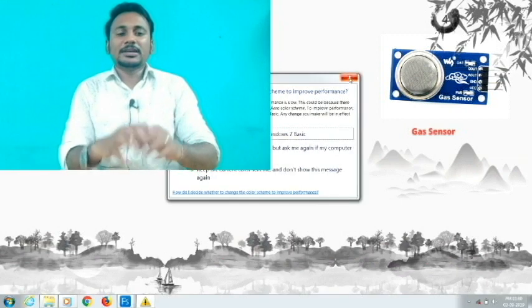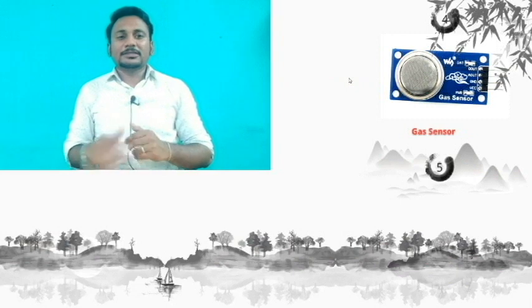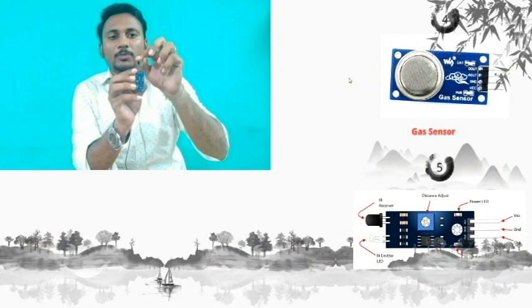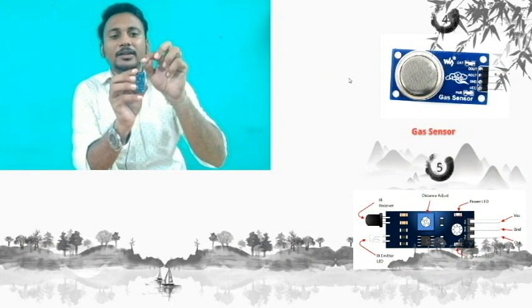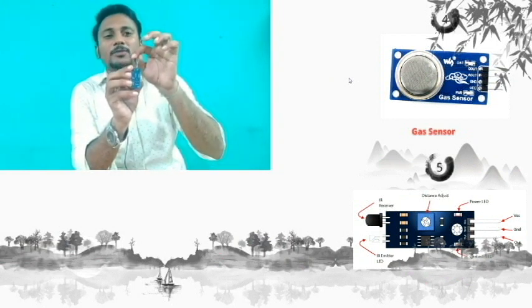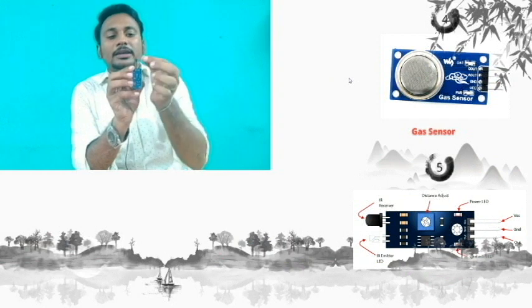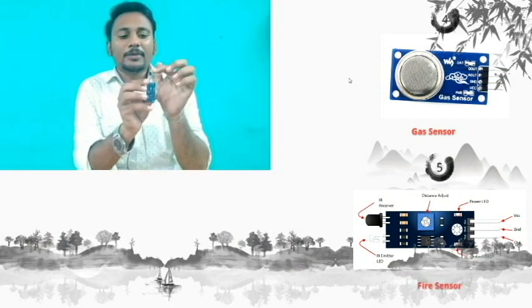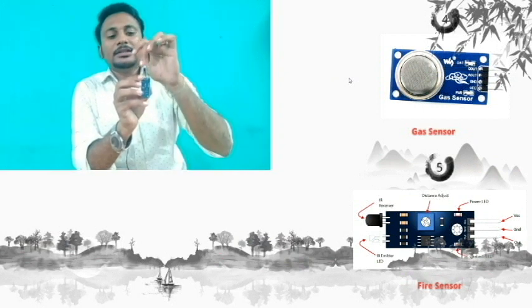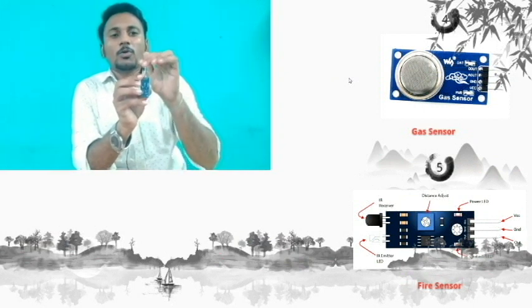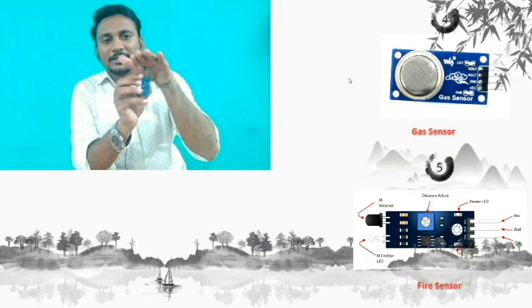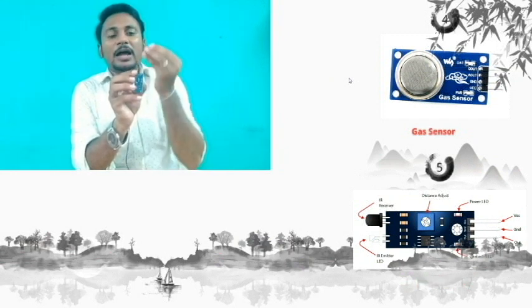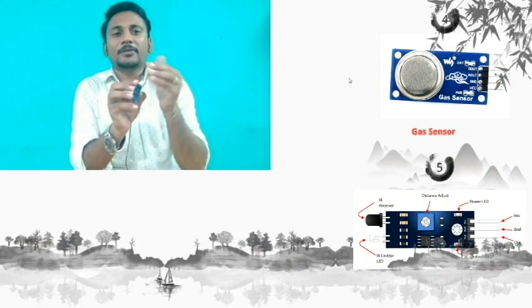The next sensor is the IR sensor. In this IR sensor, you can place two LEDs — one white and one black. The white is the IR LED, which is the transmitter, and the black is a photodiode, which is the receiver. From the white LED, I am going to emit IR light. The photodiode will receive it. If you have any obstacle, the light reflects back and is received by the photodiode.